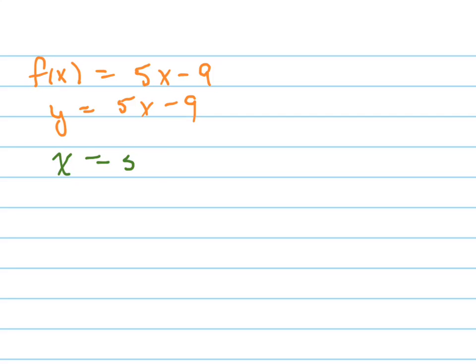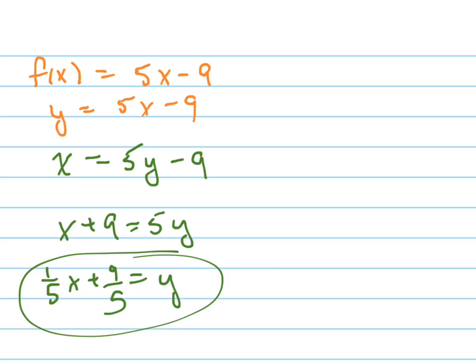If you're given an equation, you can find the inverse by flipping the x and y and then solving for y. So now let's solve for y. x plus 9 equals 5y. y equals 1 fifth x plus 9 fifths. There's the inverse function of f of x.